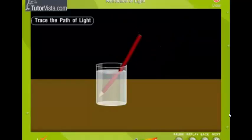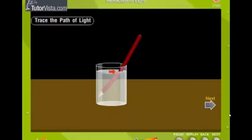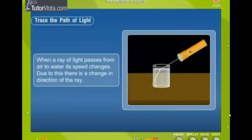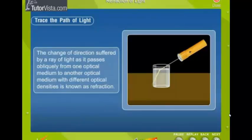Similarly, a pencil which is partially dipped in water appears bent or broken to the observer. When a ray of light passes from air to water, its speed changes. Due to this, there is a change in direction of the ray. This change of direction suffered by a ray of light as it passes obliquely from one optical medium to another optical medium with different optical densities is known as refraction.